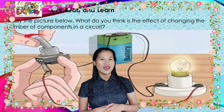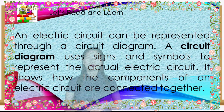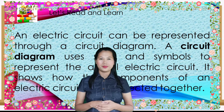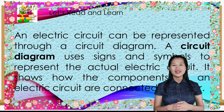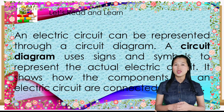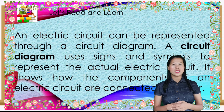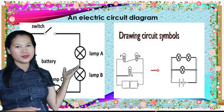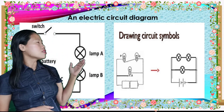What do you think is the effect of changing the number of components in a circuit? An electric circuit can be represented through a circuit diagram. A circuit diagram uses signs and symbols to represent the actual electric circuit. It shows how the components of an electric circuit are connected together. We have here an electric circuit diagram, and we also have the components and their symbols.